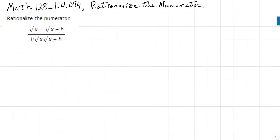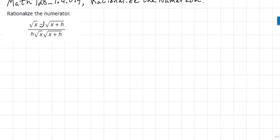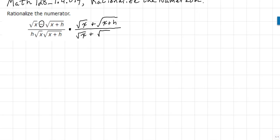what that means is we're going to multiply by the conjugate of the numerator in order to eliminate, if possible, the radicals. In this case, since we have a subtraction sign right here, the conjugate will be the square root of x plus the square root of x plus h. But if we do that in the numerator, we must also multiply that in the denominator, because we're actually multiplying by an expression that is equal to 1. And if you multiply anything by 1, it does not change the value of the expression.